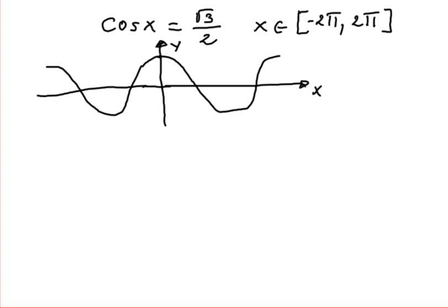All right. Cosine x is equal to square root 3 over 2 on the interval negative 2π to 2π. So what you see on the screen is supposed to resemble the cosine x graph function on the interval from negative 2π to 2π.